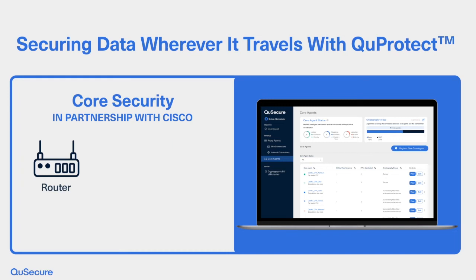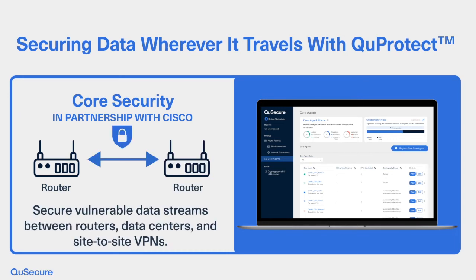QProtect Core Security safeguards data streams between routers, data centers, and site-to-site VPNs in partnership with Cisco, providing robust protection.